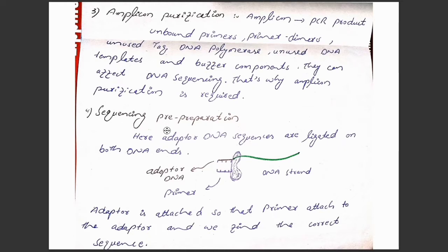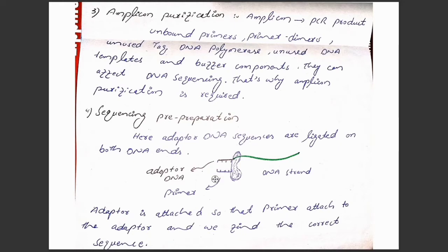The fourth step is the sequencing pre-preparation step. In this step we use adapter DNA, and those adapter DNA sequences are attached to the desired DNA strand. The desired DNA strand is shown in green, and the adapter DNA is also shown. A primer will be attached to the adapter DNA, and with the help of polymerase enzyme, further elongation of the DNA strand will occur.